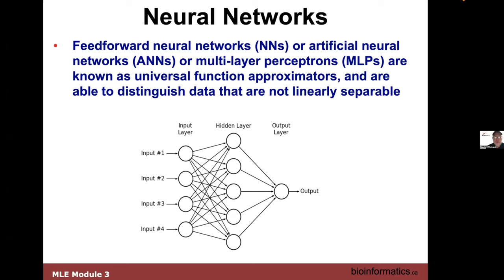With the development of neural nets, people started to realize they could do more than just Boolean logic. They could actually become what are called universal function approximators, able to do things like distinguishing or classifying data that's not linearly separable — doing exclusive OR, but also doing advanced regression.